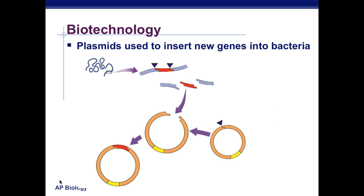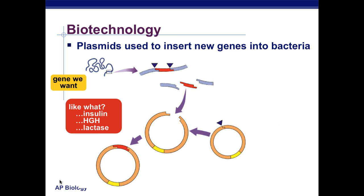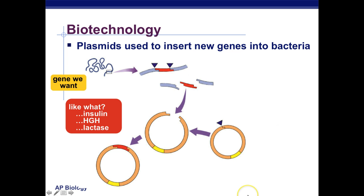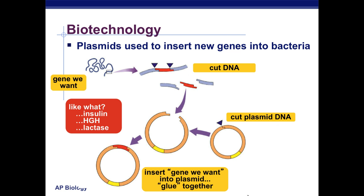Plasmids are used to insert new genes into bacteria. We find the gene we want in whatever species or organism we want, we cut it out, and we add it into the cut plasmid of the bacteria, then we insert and glue it in. Some examples include insulin, human growth hormone, and lactase, which we use to break down lactose. We cut the DNA, cut the plasmid, and insert and glue it together using ligase — and now we've formed our recombinant plasmid.